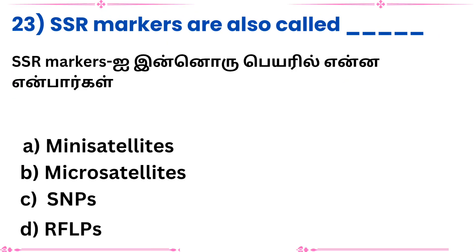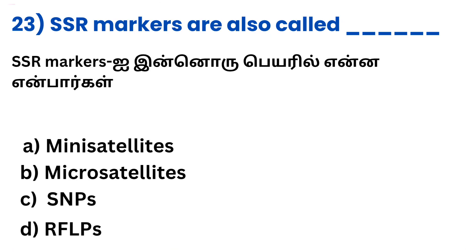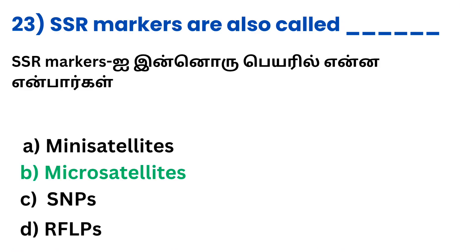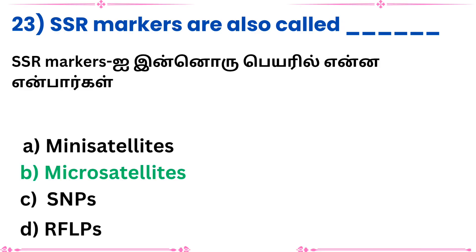Question 23: SSR markers are also called — what? Answer: Microsatellites.